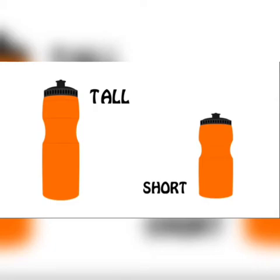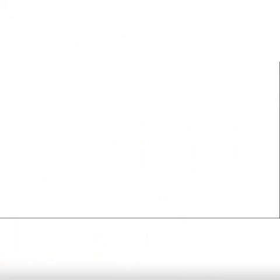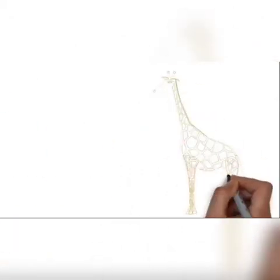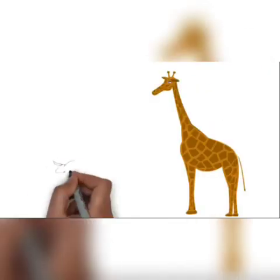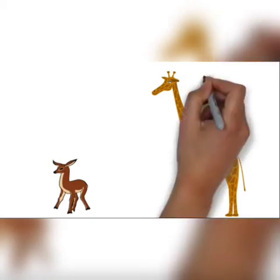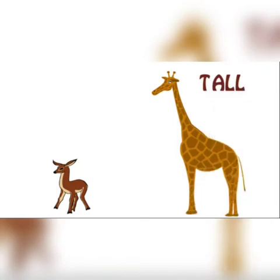Next we will be learning about tall and short one more object. A tall giraffe and a short kangaroo. The giraffe is tall and the kangaroo is short.